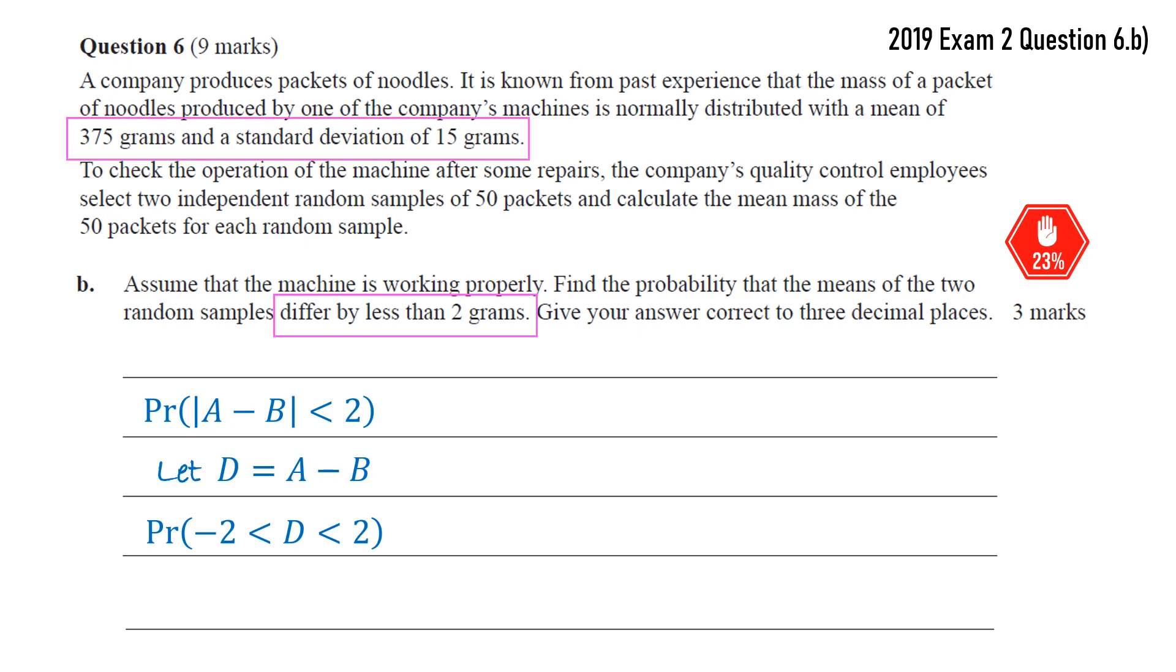We're told that for each packet of noodles the mean is 375 and standard deviation is 15. Because we have a random sample of 50 packets, the mean is still 375, but the standard deviation is going to be 15 on the square root of 50. So we're using our formula sigma over root n for a random sample of n things. That is going to be the same as a as it is for b.